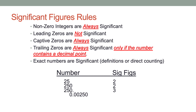What about 0.00250? Here you'll see leading zeros — zeros in front of nonzero integers on the left side of the number. The zero in front of the decimal place and the two zeros after the decimal place are considered leading zeros. Those three zeros are not significant. Two and five are significant, and again there's a trailing zero at the end. That trailing zero is significant because there is a decimal place, so there are three significant figures.